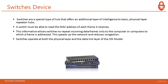Switches are a special type of hub offering an additional layer of intelligence to a basic physical layer repeater hub. A switch must be able to read the MAC address of each frame it receives, allowing it to repeat incoming data frames only to the computer or computers to which a frame is addressed. This speeds up the network and reduces congestion. Switches operate at both the physical link layer and the data link layer of the OSI model. The basic working of a switch is a one-to-one connection. If System A wants to communicate with System C, only System C gets that packet — the switch does not broadcast.